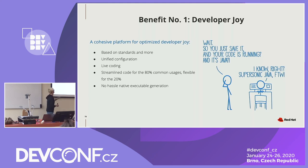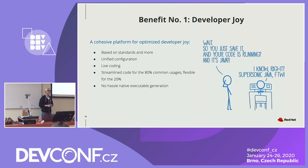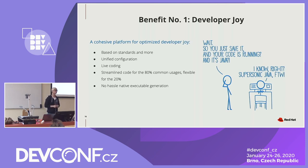A couple of benefits of Quarkus from a developer's perspective — I've been a long-time Java developer: live coding and unified configuration are really cool. You don't need to worry about repackaging and redeploying, and you don't worry about configuration getting messed up. This is really awesome. You can even create your own custom extensions — this is an open source project, and many companies, organizations, and individual developers want to create custom extensions and create PRs.